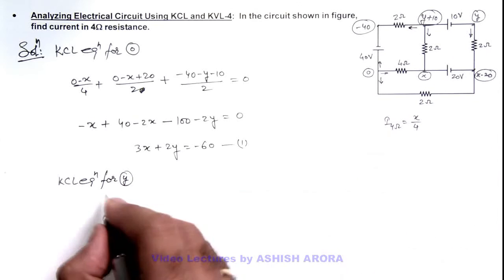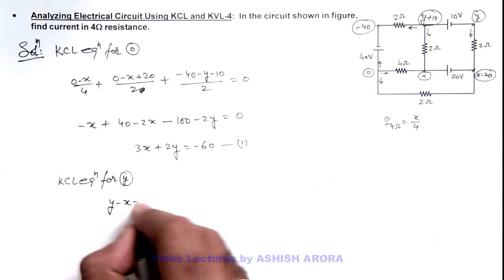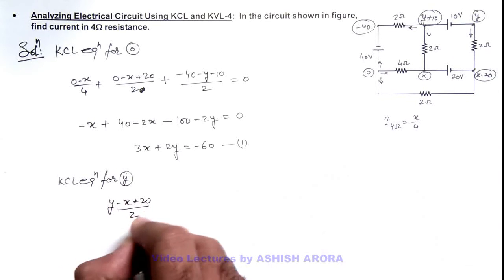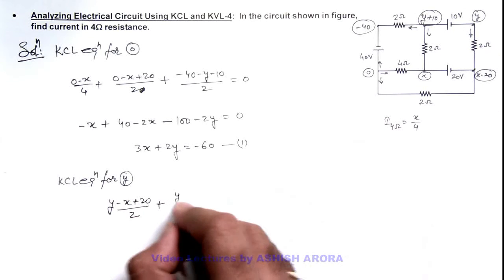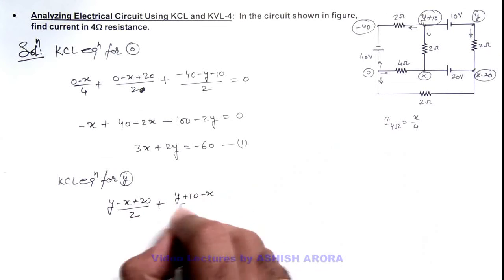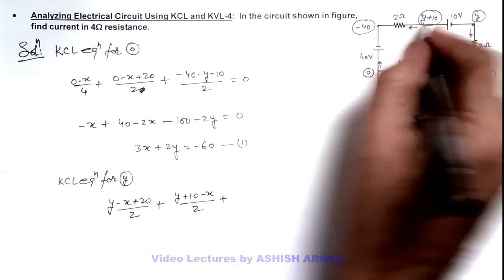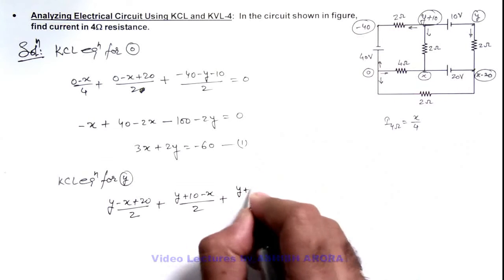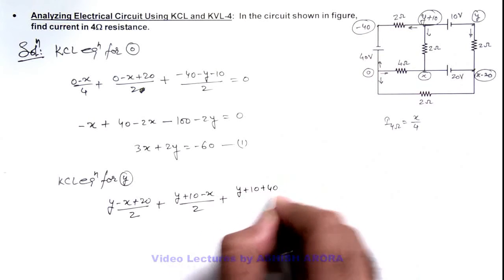So current going in this direction is y minus x plus 20 divided by 2, plus current going here is y plus 10 minus x by 2, plus current going in this direction is y plus 10 plus 40 divided by 2 is zero.